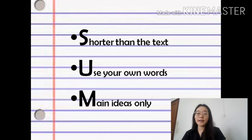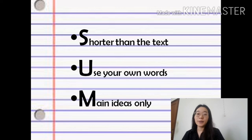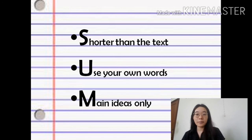So basically, the word summarizing contains the acronym SUM: S is shorter than the text, U is use your own words, and M is main ideas only. That is all for our presentation about summarizing. Thank you for watching — see you next time. Bye!